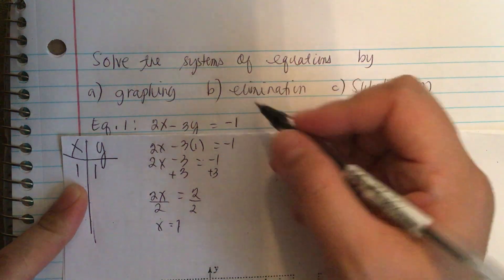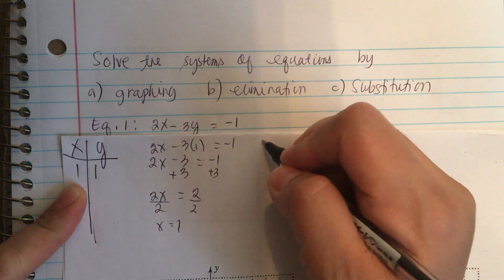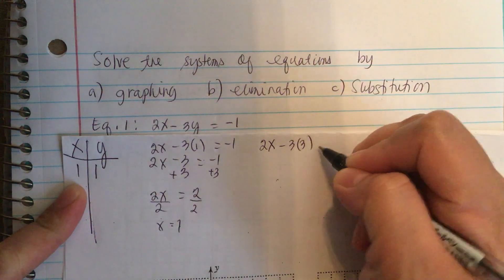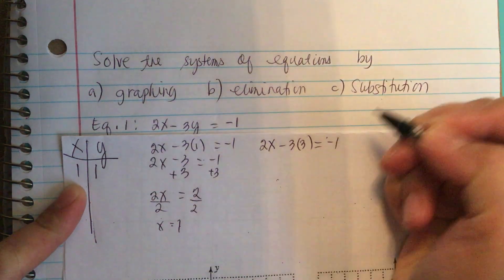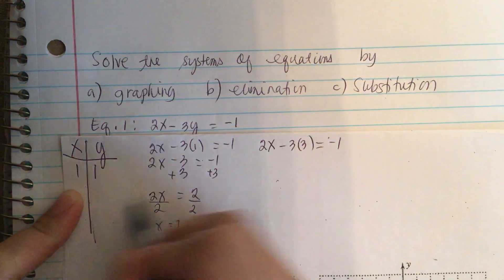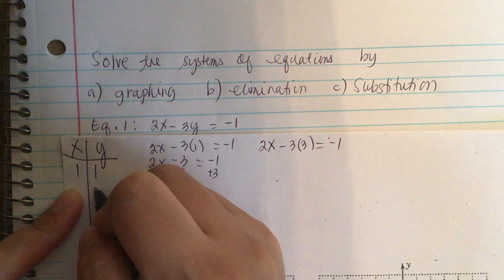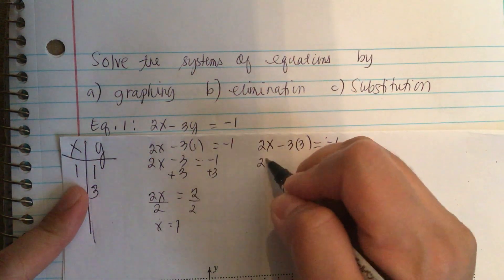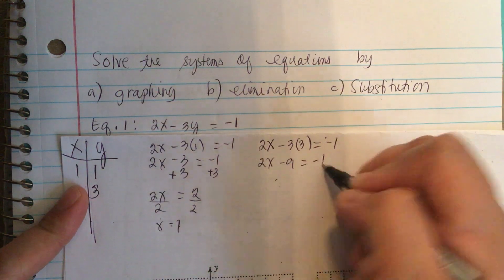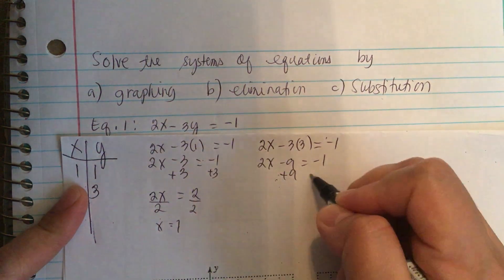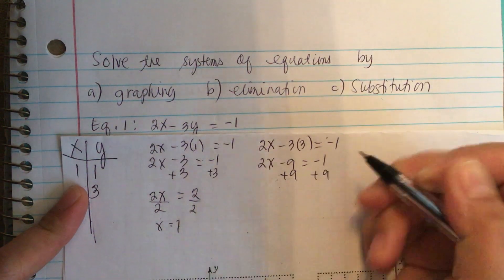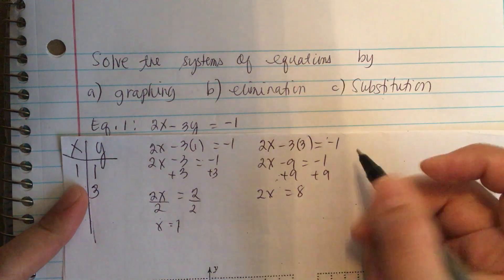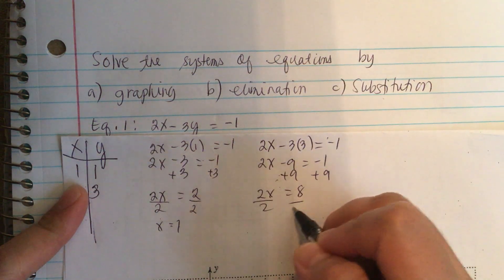We make a few more points. When y is equal to 3: 2x minus 3 times 3 equals negative 1. So, 2x minus 9 equals negative 1. Add 9 to both sides. So, 2x is equal to 8. Divide by 2, x equals 4.